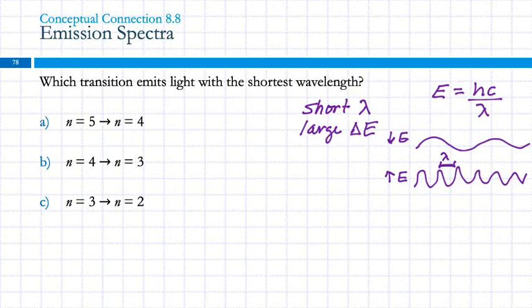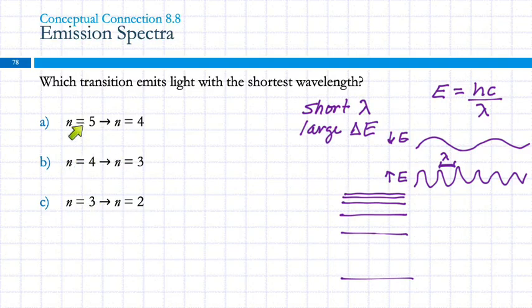Which transition emits light with the shortest wavelength? Short wavelength goes with high energy — from E equals hc over lambda, if lambda is small then energy is big. Looking at the energy level diagram, the levels get closer and closer together as you go up. So comparing 3-to-2, 4-to-3, and 5-to-4: the 3-to-2 transition gives the biggest energy change. That's a possible test question.